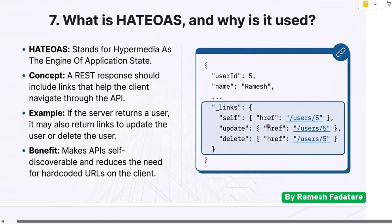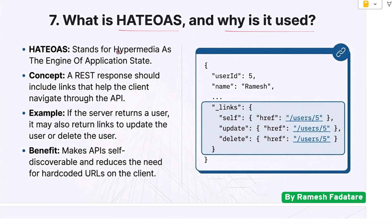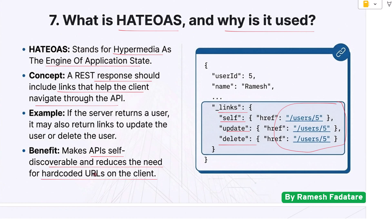Question 7: What is HATEOAS and why is it used? HATEOAS stands for Hypermedia As The Engine Of Application State. It means that a response should include links that help the client navigate through the API. For example, if the server returns a user, it may also return links to update or delete that user. HATEOAS makes APIs self-discoverable and reduces the need for hard-coded URLs on the client.